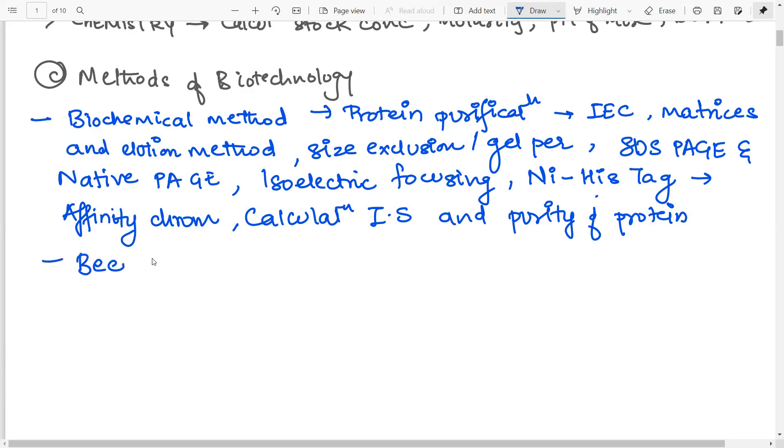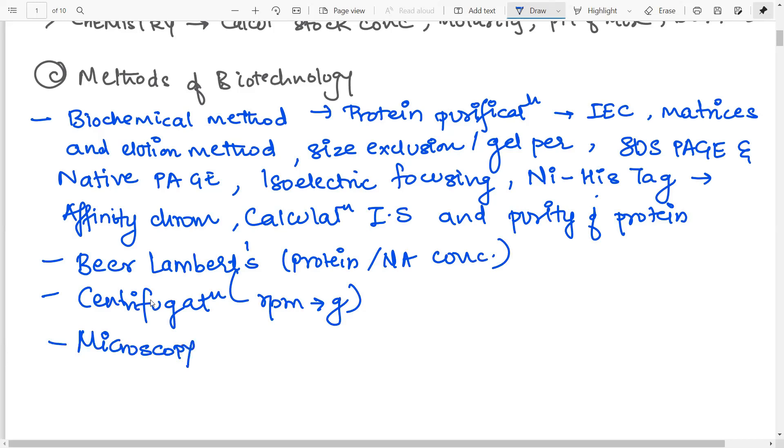Then topics related to the Beer-Lambert's law. How to calculate concentrations of proteins as well as nucleic acid. Then you have some common techniques that you need to know. That is centrifugation, especially the kind of calculation that is asked is the type conversion of RPM to G and vice versa and types of centrifugation. And then I can never forget microscopy. So all the latest kind of microscopes right from the basics up to the latest and when which method will be used should be done very well. So this is about methods of biotechnology.